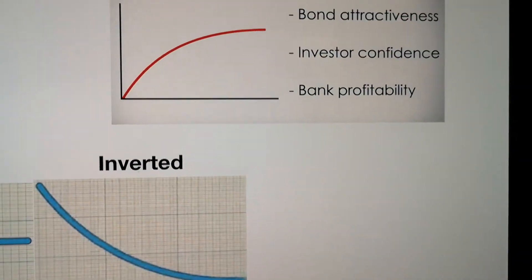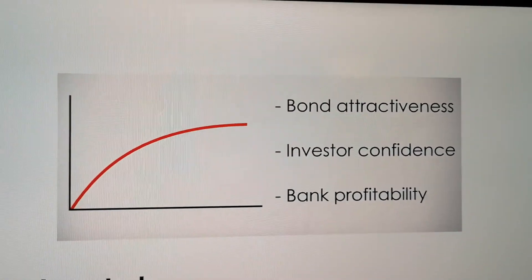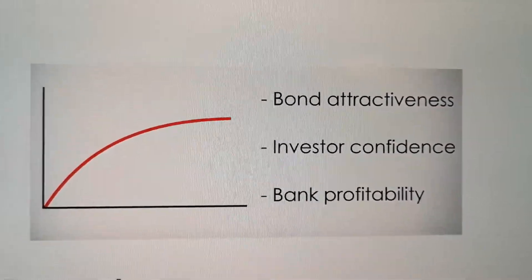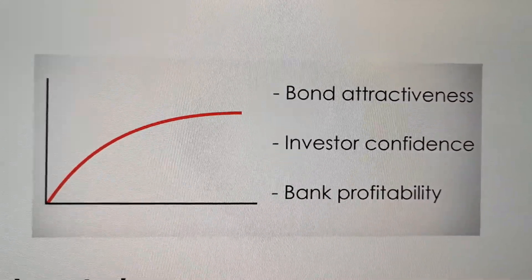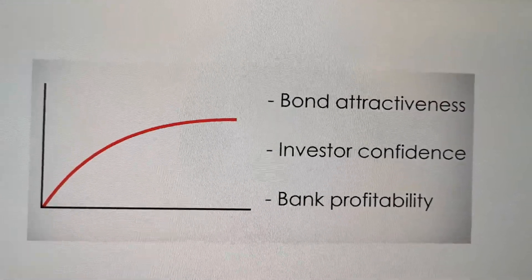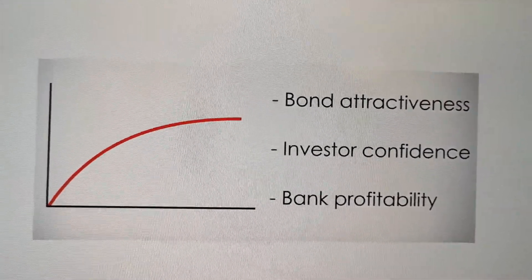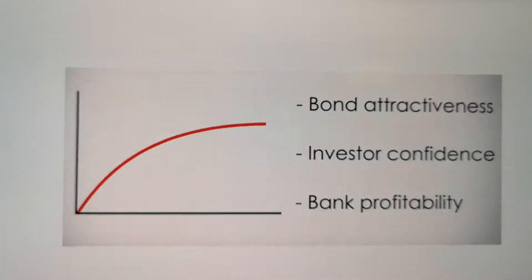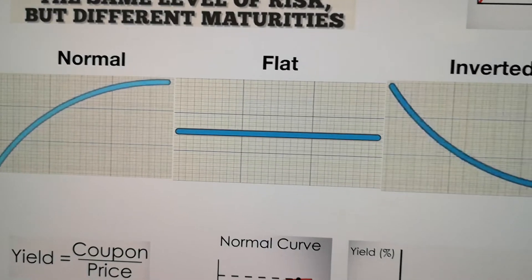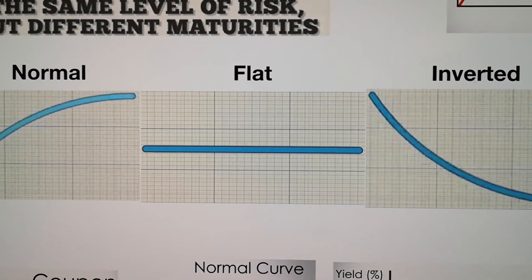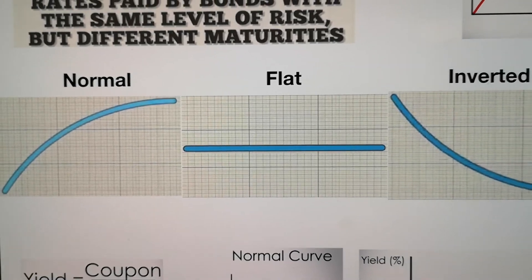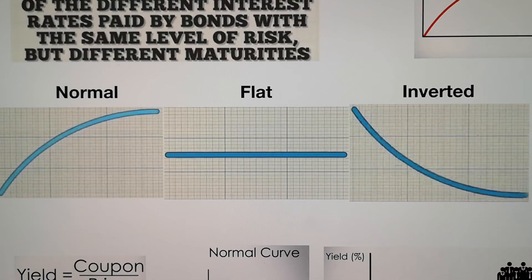In a good situation, the bond looks attractive — it's a normal curve. Investors are more confident, and the banks are more profitable in this situation. But generally, the Yield Curve is just an expectation of all the investors in the market. It can show something, it can tell something, but it does not mean something is going to happen.